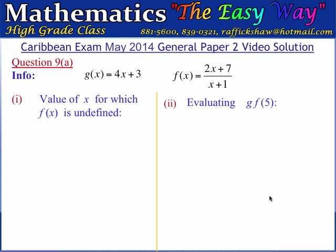We are now at question 9 of this CXC CSEC May 2014 general paper 2 exam video solution. Question 9a gives us two functions: g of x equals 4x plus 3, and f of x is a rational function equal to 2x plus 7 divided by x plus 1.